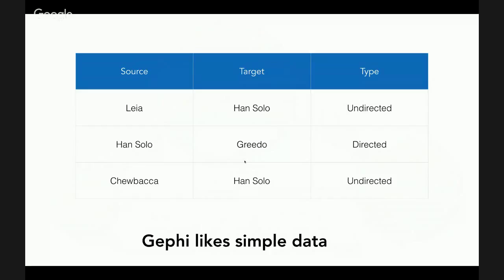When you bring data into something like Gephi, what you need is: source — the origin of a directed relationship, say the letter sender — and target, the person who receives the letter, plus the type of the edge: undirected, directed, etc. You might also have a column where you've manually created weights, or you might leave the weights to be automatically calculated based on frequency.